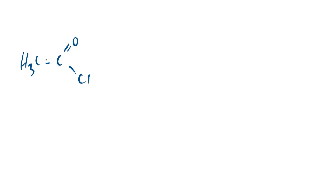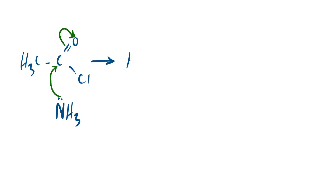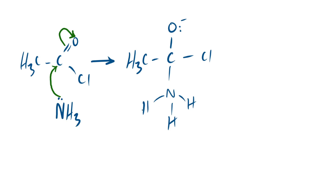Let's look at the reaction with ammonia. Ethanoyl chloride reacts with ammonia. The ammonia is our nucleophile — very similar to the water molecule, it has a lone pair on the nitrogen. Exact same principles apply: the lone pair attacks the relatively positive carbon, and the double bond electrons kick onto the oxygen. We get a very similar intermediate with the same positive/negative charges, the chlorine leaving group, and the nitrogen now bearing a positive charge.